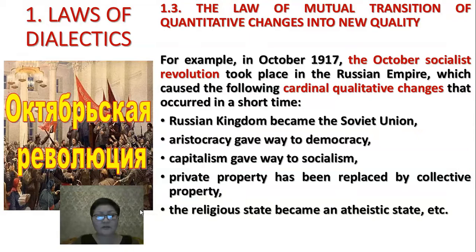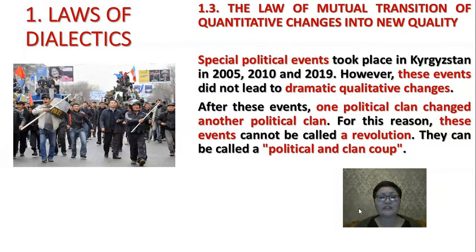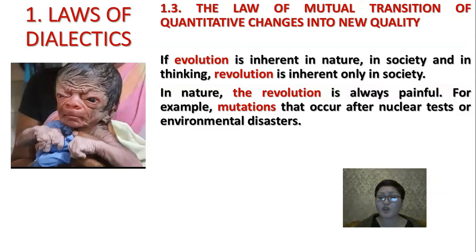Special political events took place in Kyrgyzstan in 2005, 2010, and 2019. However, these events did not lead to dramatic qualitative changes — after these events, one political clan simply replaced another political clan. For this reason, these events cannot be called a revolution; they can be called a political and clan coup. If evolution is inherent in nature, society, and thinking, revolution is inherent only in society. In nature, revolution is always painful — for example, mutations that occur after nuclear tests or environmental disasters.